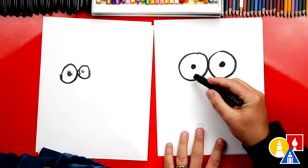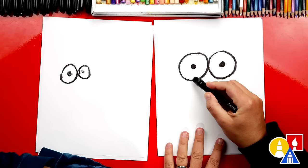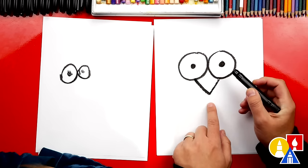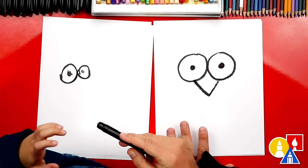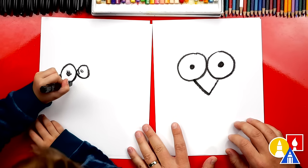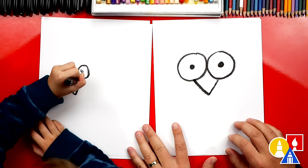Now we're going to draw the beak. We're going to draw the letter V. We'll start here, and we're going to come down, and then back up. Look how there's a little point at the bottom. Do you want to draw the letter V? Down. Back up. You did it.